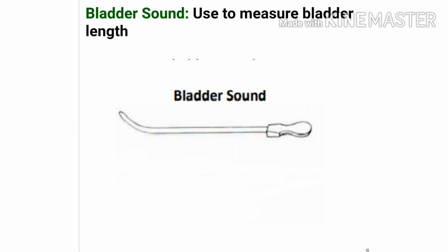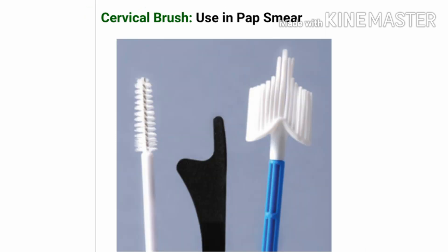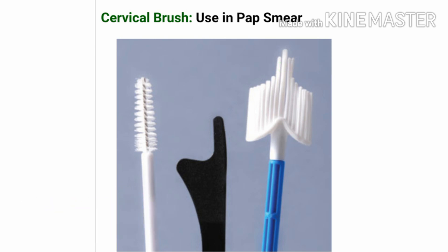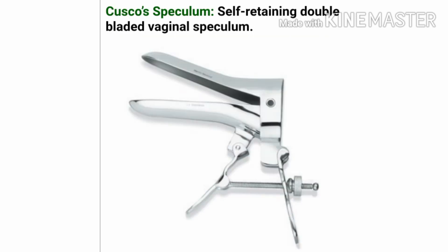This is the bladder sound instrument; it is used to measure the bladder length. This is the cervical brush, used in pap smear. Pap smear is a routine screening procedure for cervical cancer, and the cervical brush is used to take a sample from the cervix.